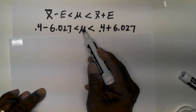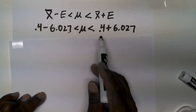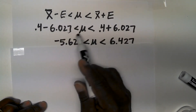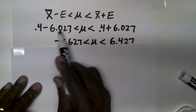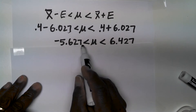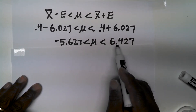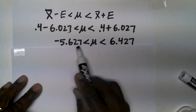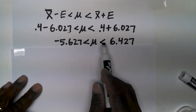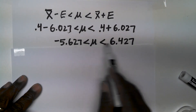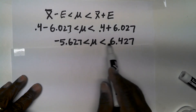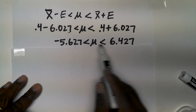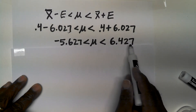Performing the calculations, on the left we get negative 5.627, and on the right we get 6.427. This is the 95% confidence interval for the mean. It means we are 95% confident that the population mean is between negative 5.627 and positive 6.427.